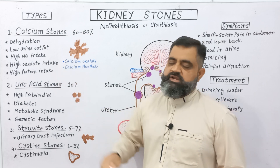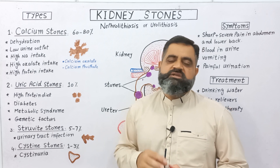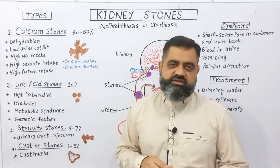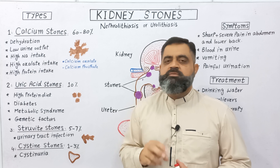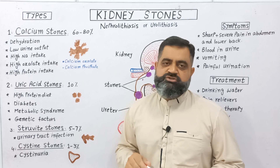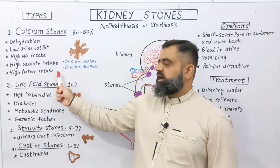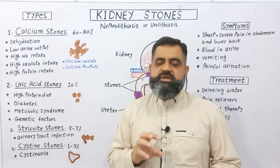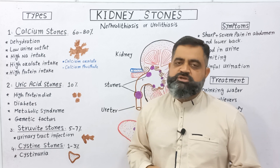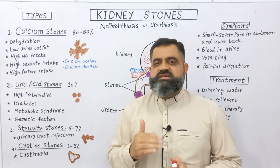Third, high oxalate intake. There are certain foods like okra, tomatoes, and some other vegetables and fruits which contain a high amount of oxalate. These oxalates can be deposited inside the kidney and result in the formation of calcium oxalate stones. Fourth, high protein intake especially meat or pulses can also lead to the formation of these types of stones with less intake of water.